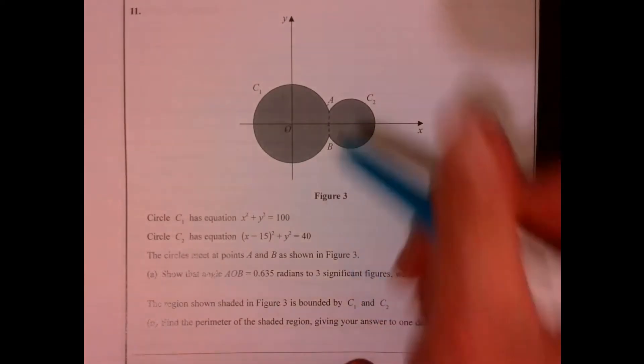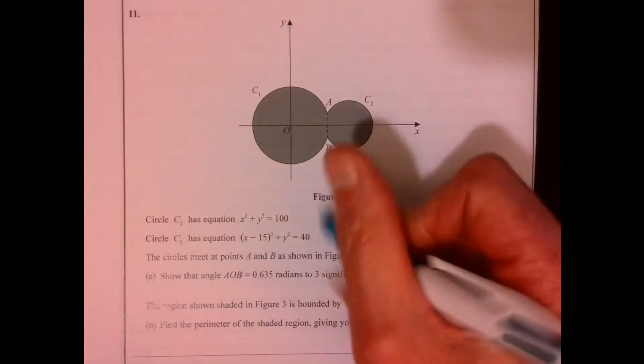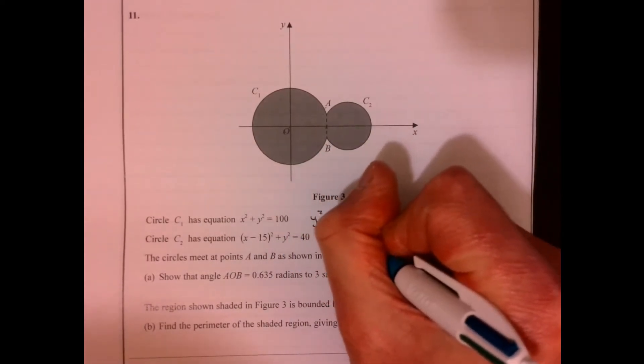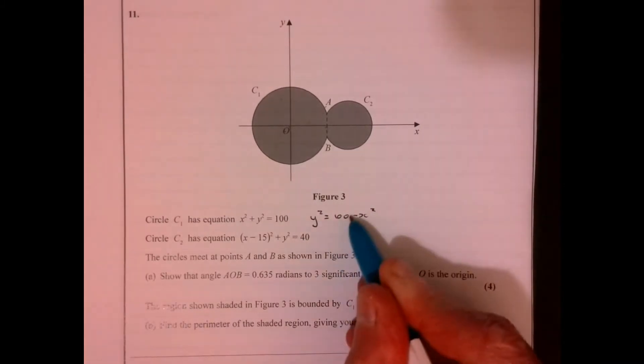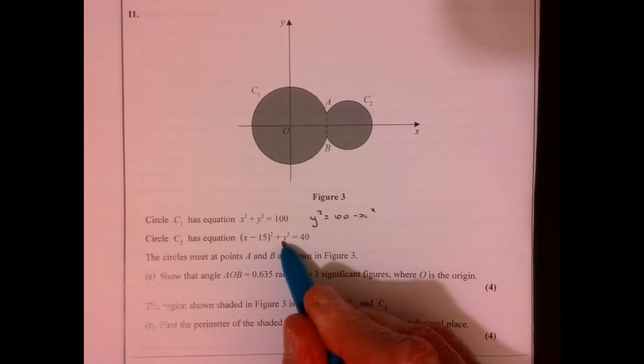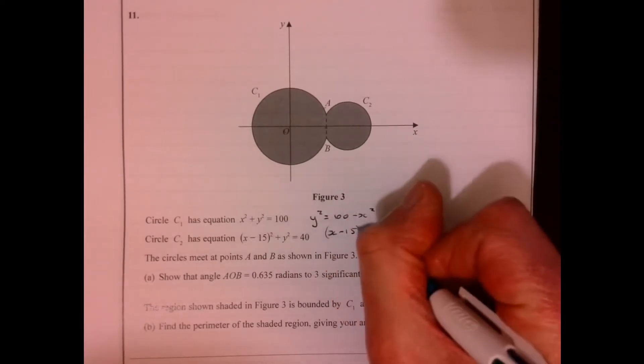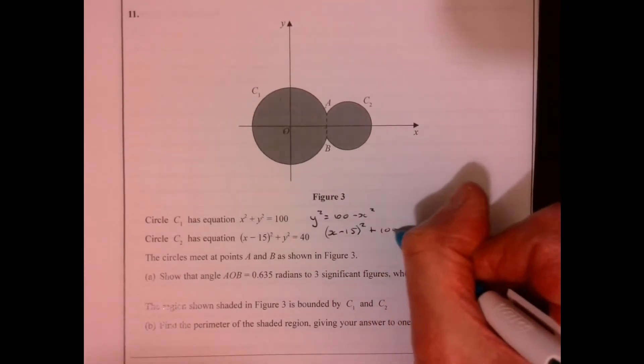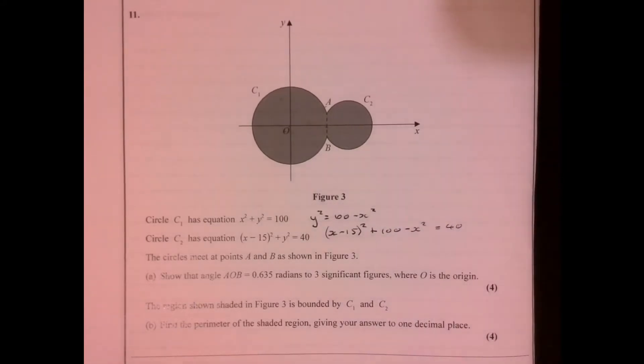Right, number 11. So we need to find out these intersection points. Probably the easiest idea is to think, well, y squared equals 100 minus x squared, and then if we just pop that in here.